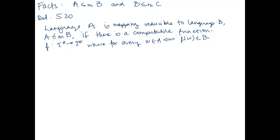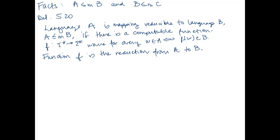What we mean is: if we have a string in language A, then the result of the reduction function F on that string is going to be in B. Likewise, if W is not in A, then F of W is not in B. So function F is the reduction from A to B — direction matters, from A to B.